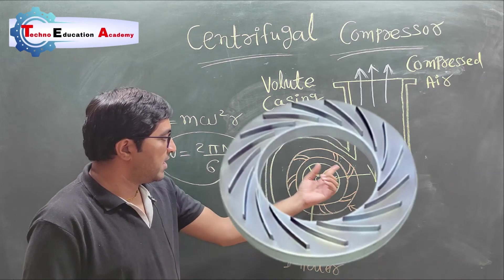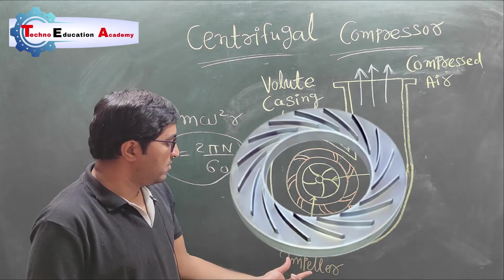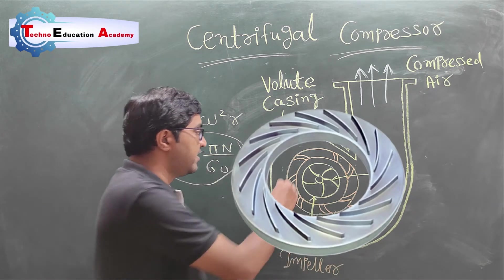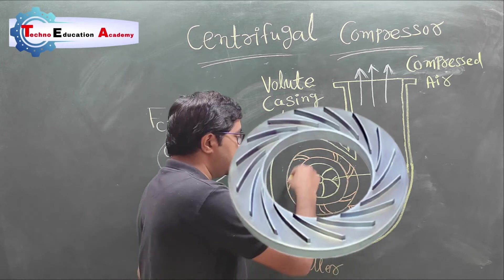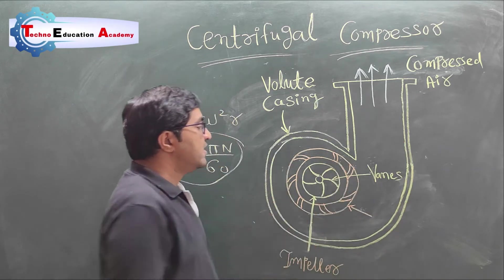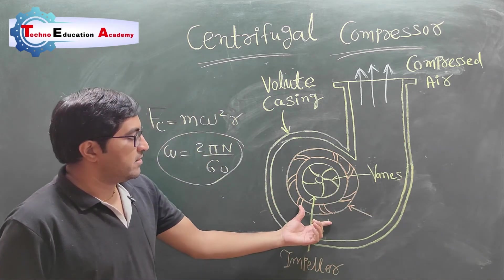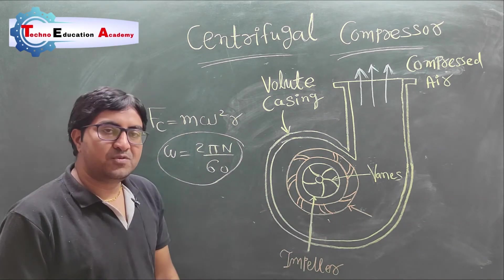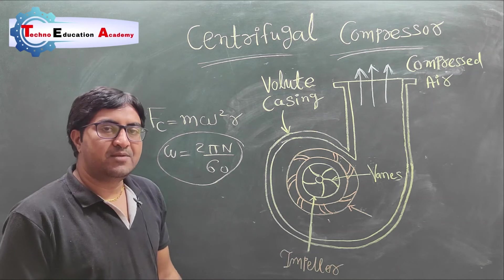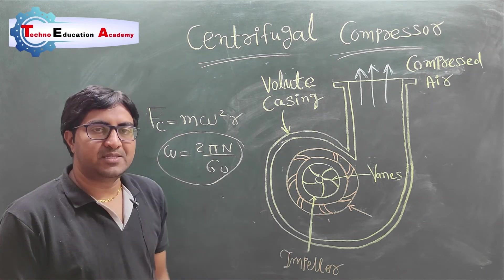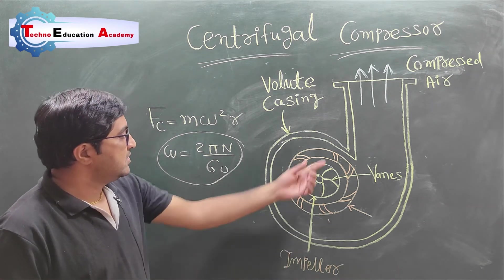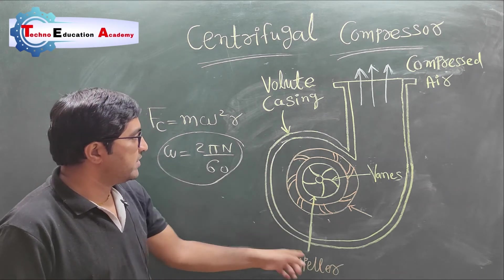This is a diffuser. On the outer periphery of the impeller, here you can see that one ring is there — it is called the diffuser ring. The function of the diffuser is to again increase the pressure. This is the volute casing.